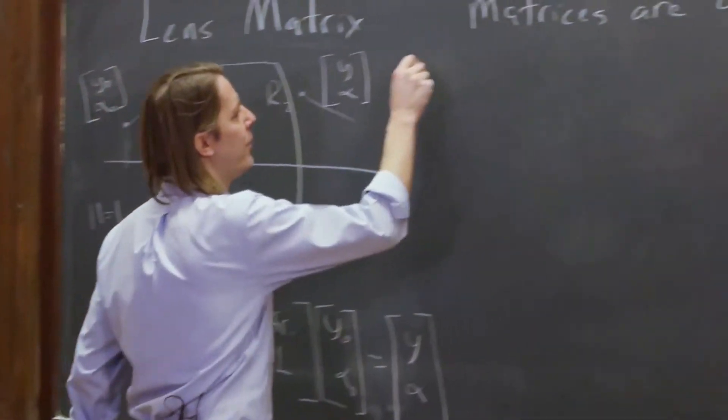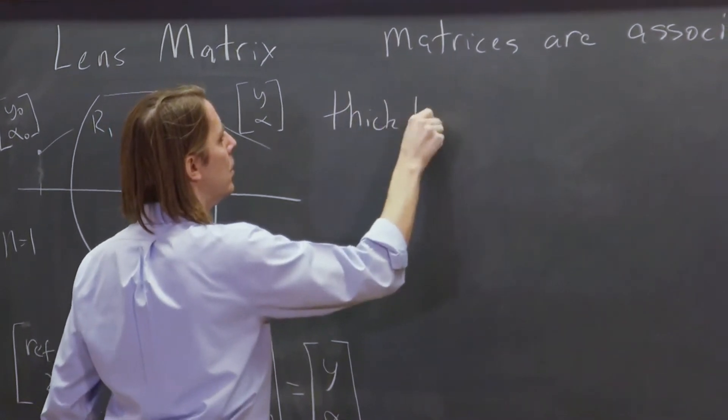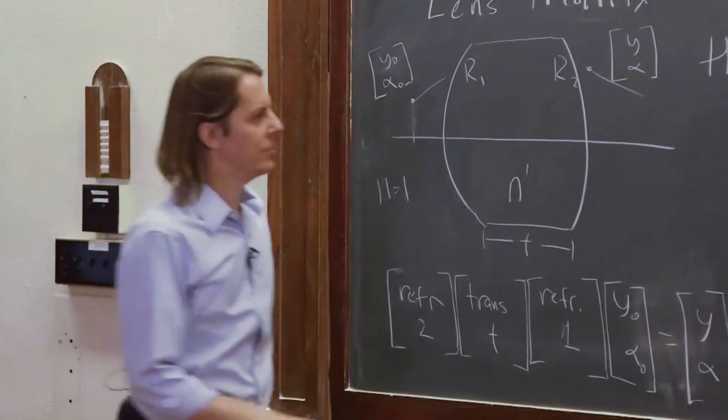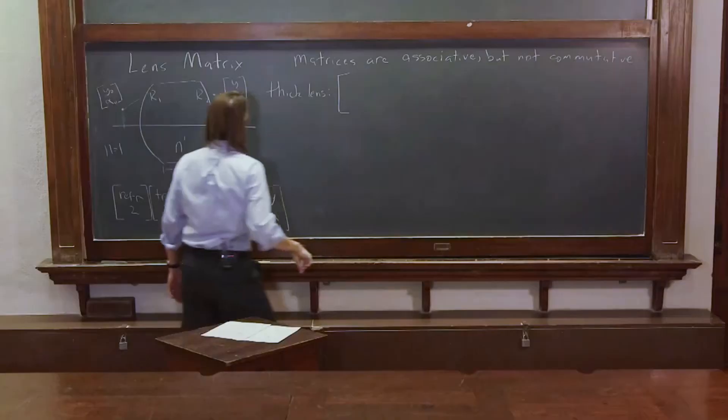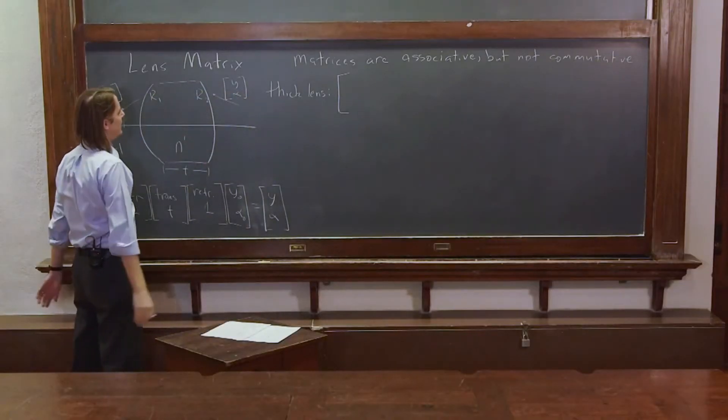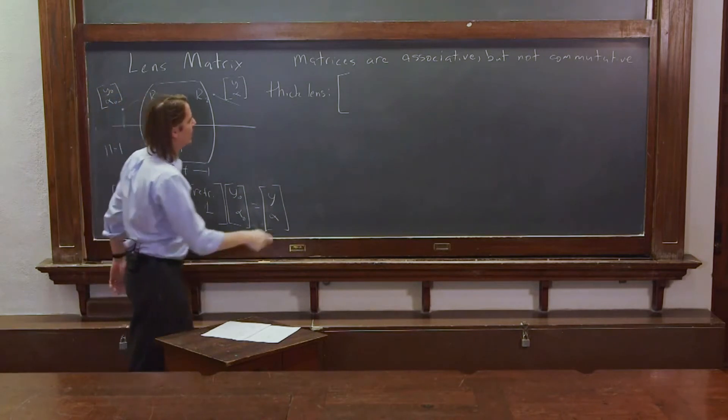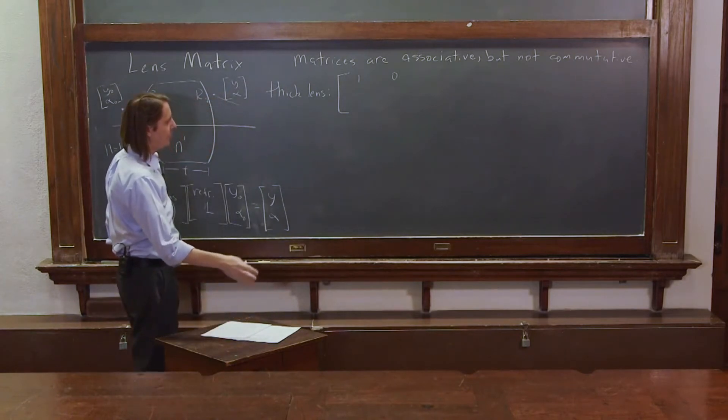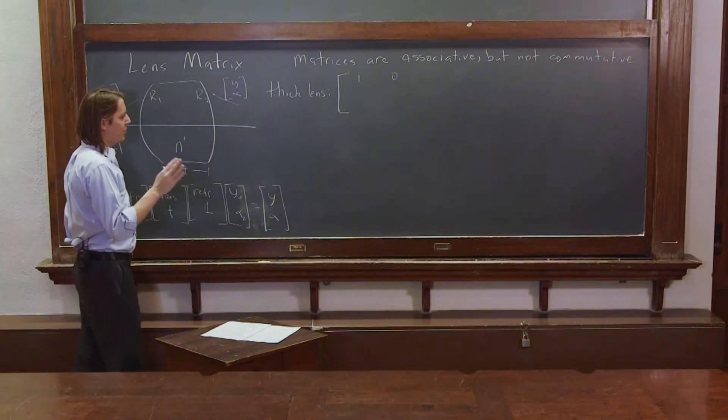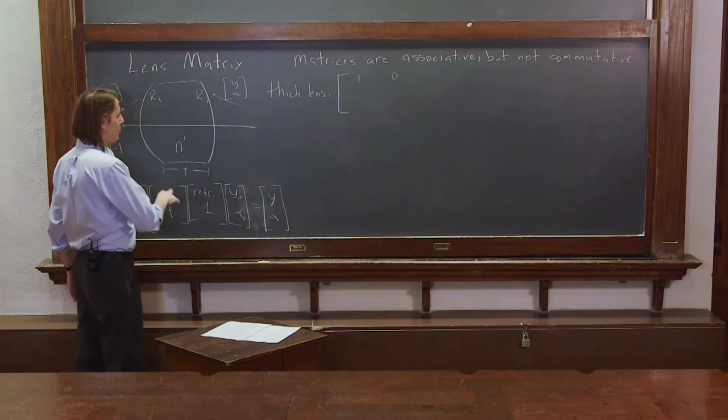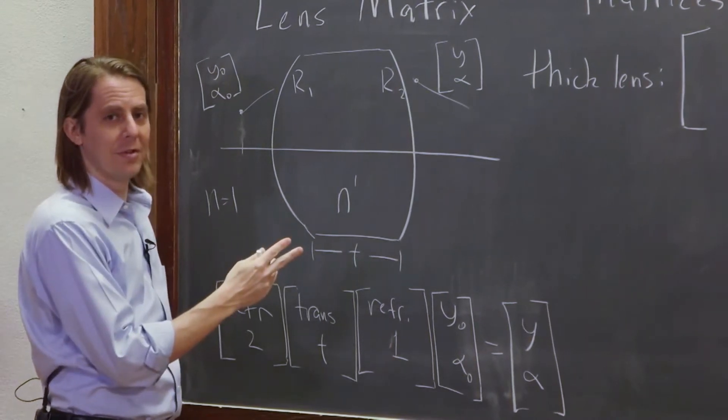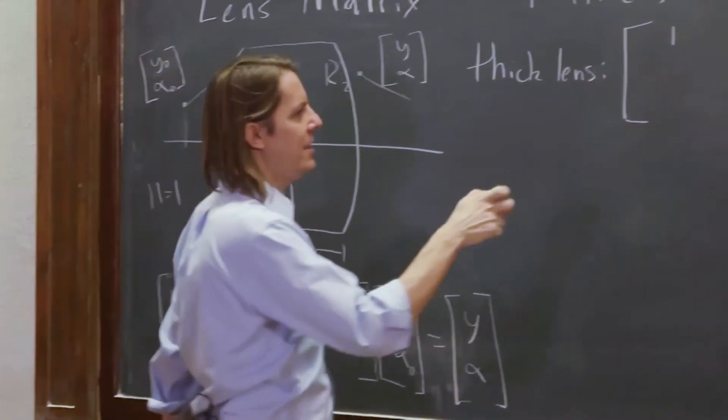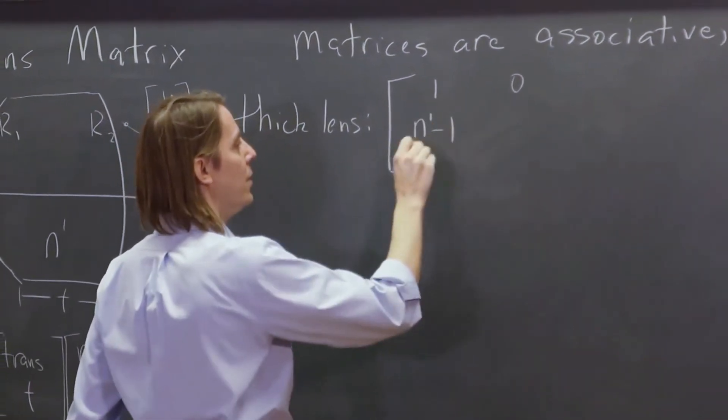So let's put it all together for the thick lens and see what we get. Just to help me write it, I'm actually going to write it backwards. I'm going to start with refraction two. So here is refraction two. The ray's already done a couple things. It hits this interface. We think back to our refraction matrix. It was one here. It was zero here. It was n minus n prime over r n prime. So that's back when we were going from n to n prime, but now they're reversed. Now we're going from n prime to n. So that n minus n prime is actually flipped around. It's actually n prime minus n. And n is one. So I'll put one there.